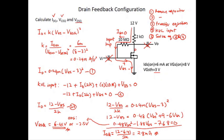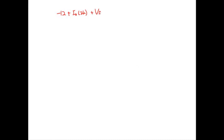VDSQ can be calculated from the KVL that passes through the drain-source path. The KVL passes from the 12 V source through the 2K resistor and then through VDS. So the KVL is: 12 − ID × 2K − VDSQ = 0. With ID = 2.8 mA, VDSQ = 12 − 2.8 mA × 2K = 12 − 5.6 = 6.4 V. So VDSQ = 6.4 volts.